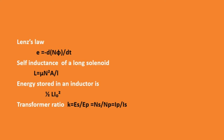Next is energy stored in an inductor: 1 by 2·L·I² . Next is transformer ratio K equal to Es by Ep. Voltage in the secondary by voltage in the primary equals Ns by Np, which is the number of turns in the secondary by turns in the primary, equal to Ip by Is, that is current in the primary by current in the secondary.